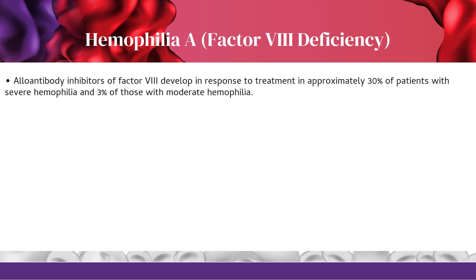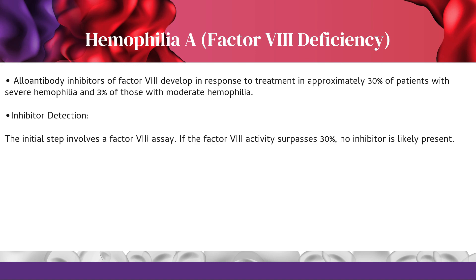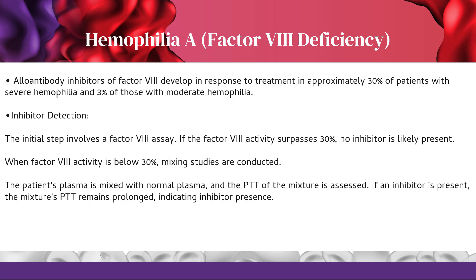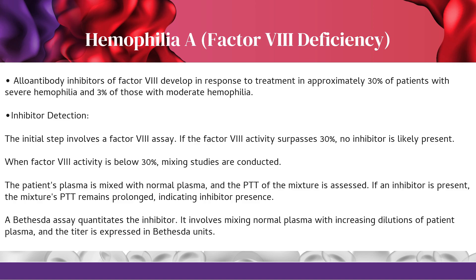Alloantibody inhibitors of factor 8 develop in approximately 30% of patients with severe hemophilia and 3% of those with moderate hemophilia. For inhibitor detection, the initial step involves a factor 8 assay. If factor 8 activity surpasses 30%, no inhibitor is likely present. When factor 8 activity is below 30%, mixing studies are conducted — the patient's plasma is mixed with normal plasma, and the PTT is assessed. If an inhibitor is present, the mixture's PTT remains prolonged. A Bethesda assay then quantitates the inhibitor by mixing normal plasma with increasing dilutions of patient plasma; the titer is expressed in Bethesda units.